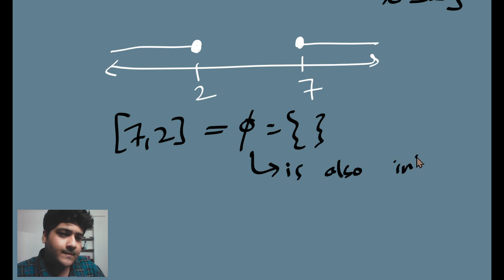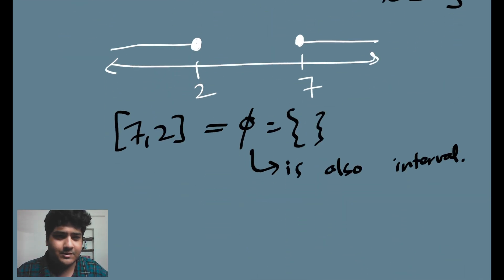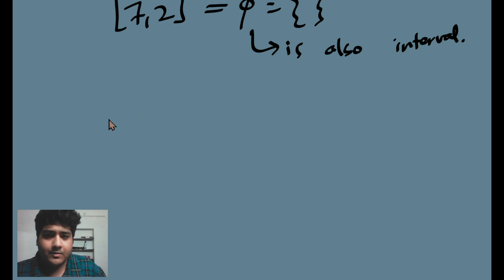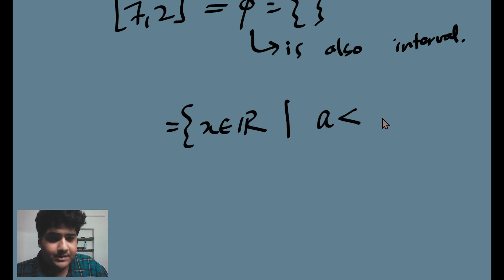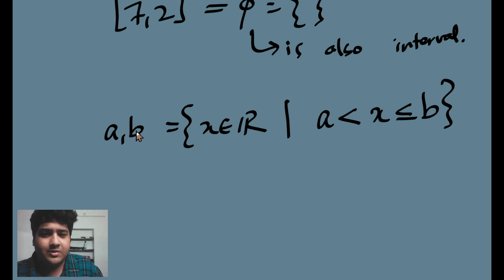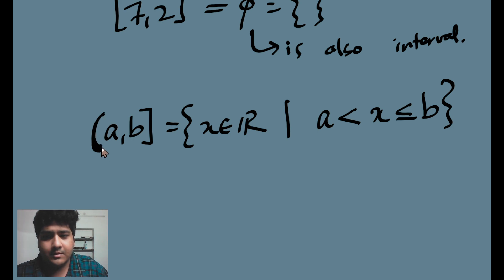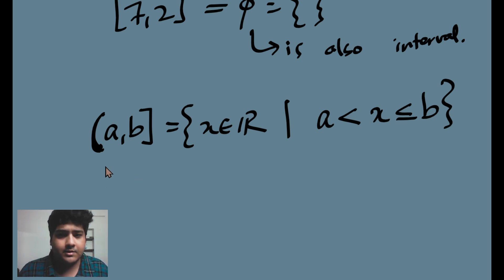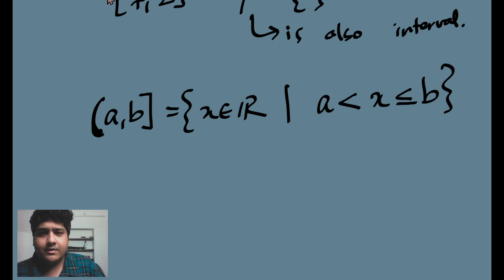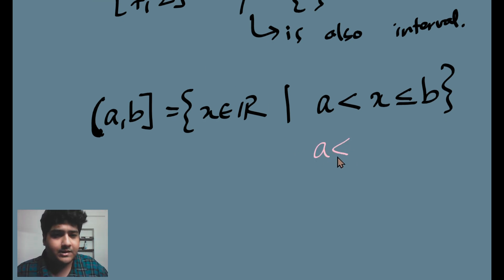So now we know: the empty set is an interval, a singleton is an interval, and any standard [a, b] is an interval. What if I want a notation for A < X ≤ B? I use different brackets to differentiate: a square bracket when the endpoint is included, and a round bracket when the endpoint is excluded. So for A < X ≤ B, I write (a, b], with a round bracket on A and a square bracket on B.